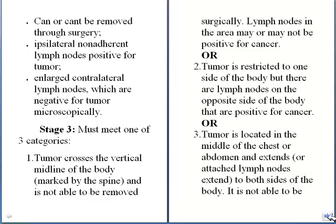Stage 3 must meet one of three categories. The first is that the tumor crosses the vertical midline of the body and cannot be surgically removed — the lymph nodes in that area may or may not be positive for cancer. It is definitely not a localized tumor. Or the tumor is restricted to one side of the body but there are lymph nodes on the opposite side of the body.